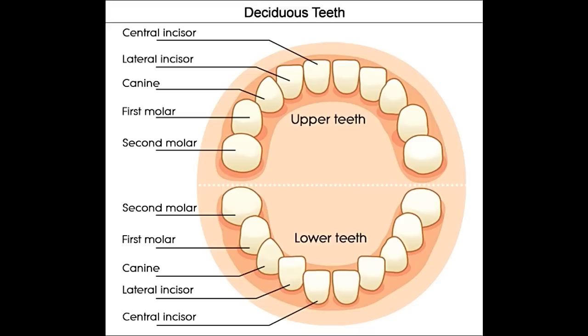Universal Numbering System — widely used by dentists in the United States. In the Universal Numbering System for adult teeth, the third molar on the right in the upper or maxillary dental arch is assigned the number 1. The teeth are numbered along the upper dental arch from right to left, as 1 to 16, with the last molar tooth back on the top left of the upper dental arch as number 16.